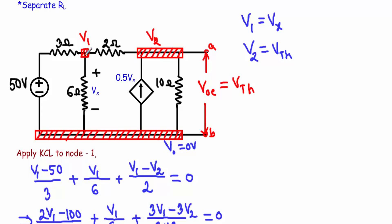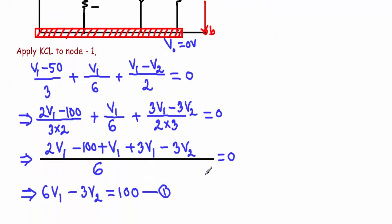Applying Kirchhoff's current law at node one, with all currents outgoing: current through the 3 ohm is (V1 − 50)/3, current through the 6 ohm is V1/6, and current through the 2 ohm is (V1 − V2)/2, all equal to zero. Taking the LCM of 2, 6, and 3, which is 6, and simplifying gives us: 6V1 − 3V2 = 100. This is equation number 1.